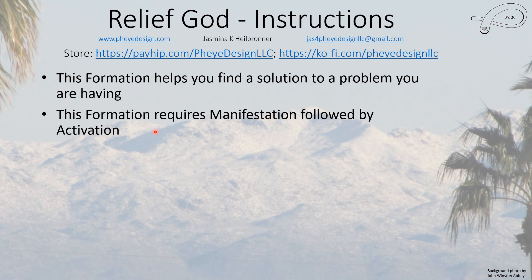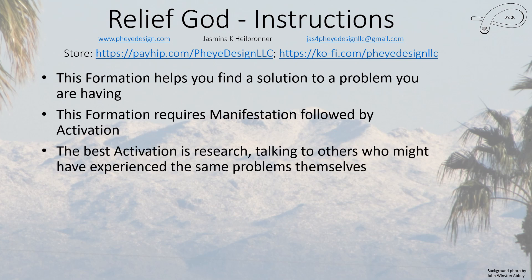It requires manifestation followed by activation. If you're urgent and have to use a month where the day clashes with you, do the manifestation on the clash day and then wait until a non-clash day comes to start doing the activation. The best type of activation is research — talking to others who might have experienced the same type of problems, or calling agencies that deal with the kind of problem you're having. For example, if it's a legal problem, this could be contacting a lawyer and researching which is the best lawyer for your particular problem. All that kind of activation can start after you've manifested, but don't start it if that day is a clash day.